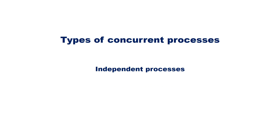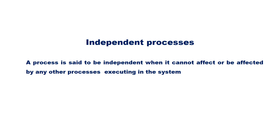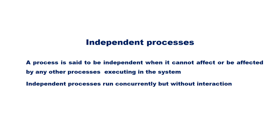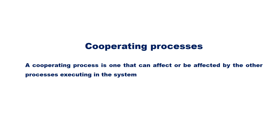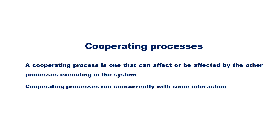There are two types of concurrent processes: independent processes and cooperating processes. A process is said to be independent when it cannot affect or be affected by any other process executing in the system. Independent processes run concurrently but without interaction. A cooperating process is one that can affect or be affected by the other processes executing in the system. Cooperating processes run concurrently with some interaction.